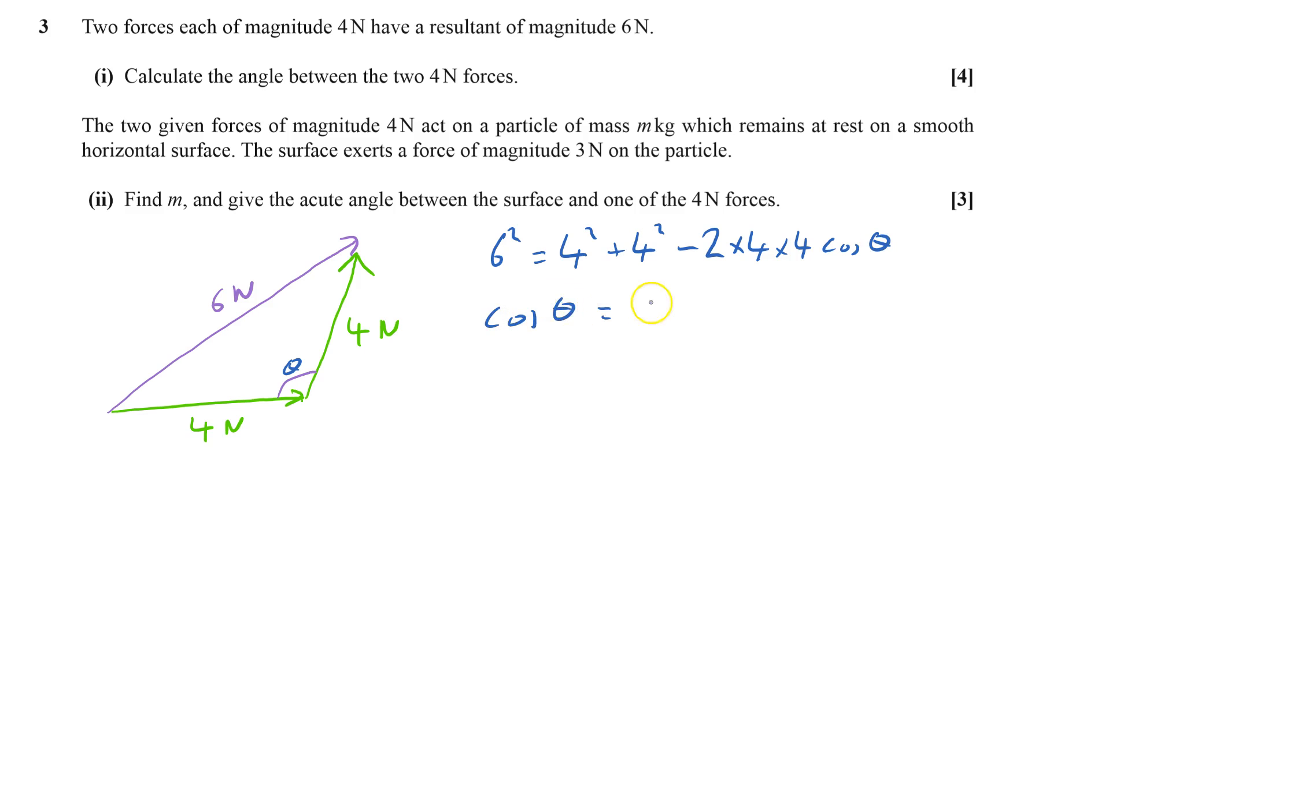Cos theta equals, at this third side, take away six squared, four squared plus four squared minus the six squared, all over two times four times four. And that equals minus 0.125. And so theta equals cos to the minus one of that, which is 97.1807 degrees.